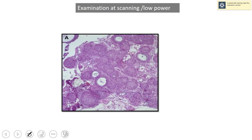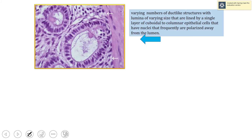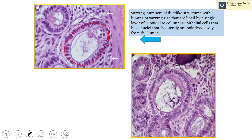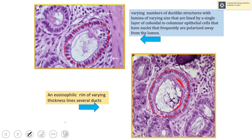At low magnification, the cell-rich nodules are visible and the yellow arrows indicate the duct-like structures. Each duct-like structure is lined by a single layer of cuboidal or columnar cells, the lumen varies in size, and the nuclei are away from the lumen. The lumen is also lined by eosinophilic material — this is the hyaline ring.